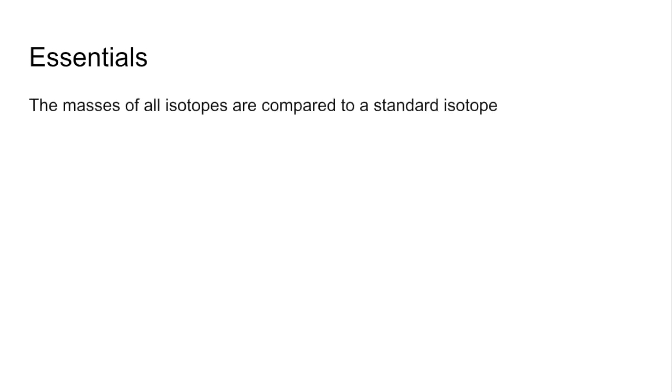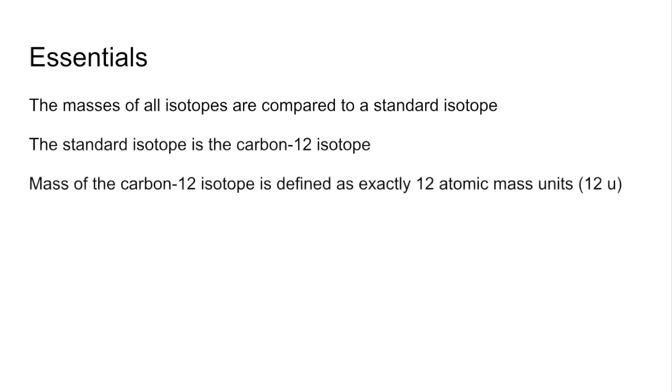So some essentials then. The masses of all isotopes are compared to a standard isotope, and the standard isotope is the carbon-12 isotope. The mass of the carbon-12 isotope is defined exactly as 12 atomic mass units or 12U, so therefore a twelfth of that is going to be one atomic mass unit.